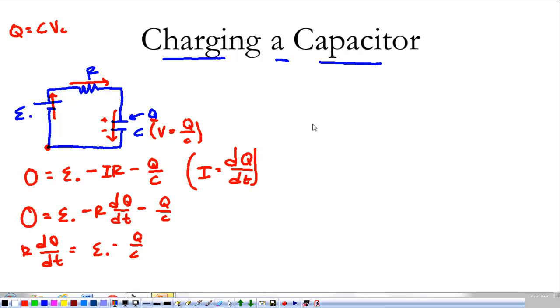So, I'm going to rewrite that up here. R times DQ over DT is equal to EMF minus Q over C. We're going to do a little separation of variables. So, I'm going to say R times DQ over my function of Q over here, EMF minus Q over C, is equal to DT. And then I can just bring R over. That's not a big deal. We're going to integrate this thing.